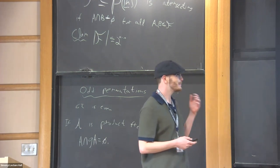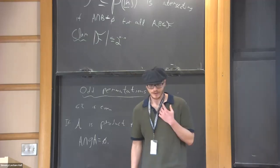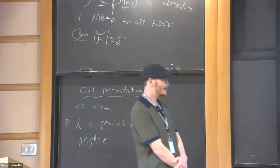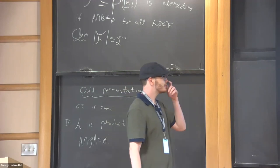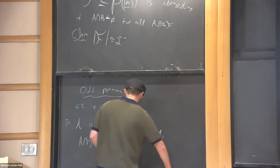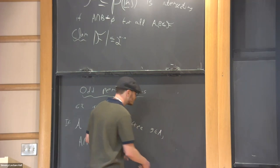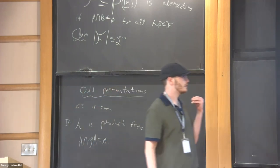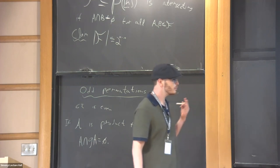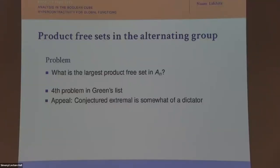The real problem we care about is product-free sets in the alternating group. This problem was posed by Babai and Sós in 1985. Ben Green has a list of 100 favorite open problems, and this is problem number 4. It turns out that even though this problem comes from multiplicative combinatorics, it's related to problems in extremal combinatorics where the extremal solution is a dictator.